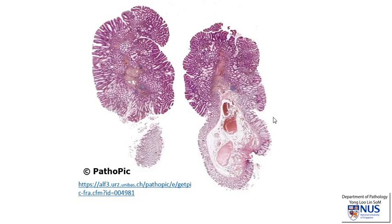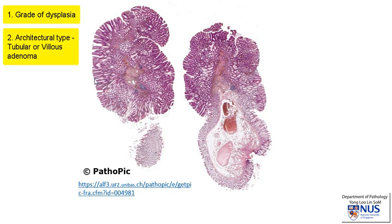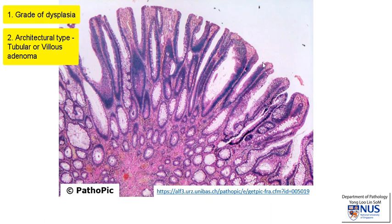Usually these polyps are removed at the time of endoscopy, and what we evaluate is the grade of dysplasia. We also look at the architecture of the polyp — whether it is a tubular adenoma, meaning most of the crypts form tube-like invaginations, or whether it is a villous adenoma. The villous architecture shows more finger-like projections of the dysplastic epithelium. If it is mixed, it is called a tubulovillous adenoma; otherwise it is classified as a tubular adenoma or a villous adenoma.